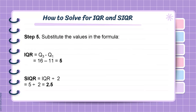Our IQR value is 5. To solve for the SIQR, we divide the IQR by 2: 5 divided by 2 gives us a SIQR value of 2.5.